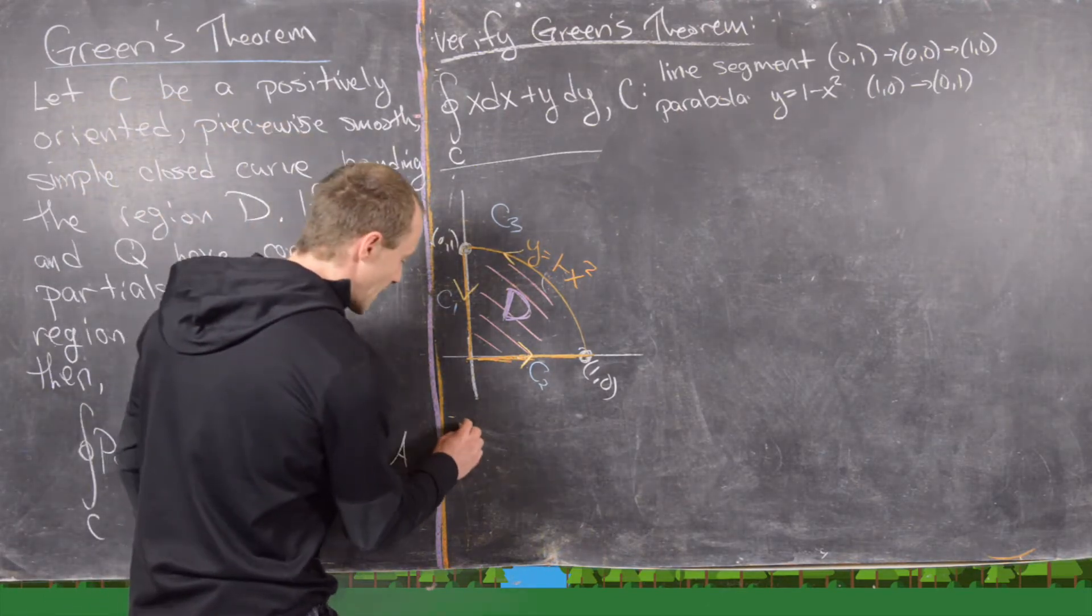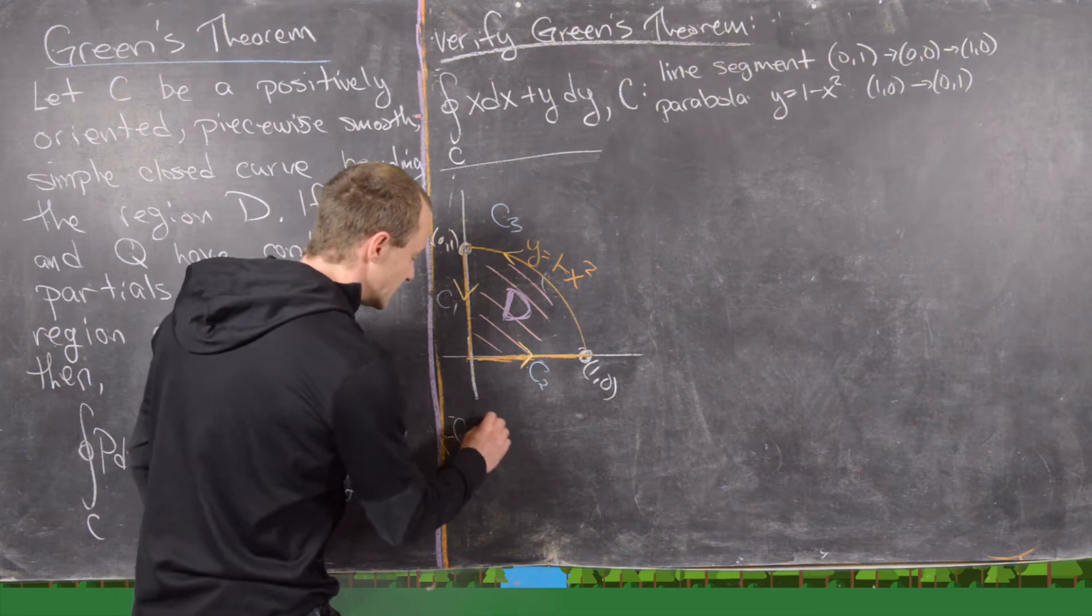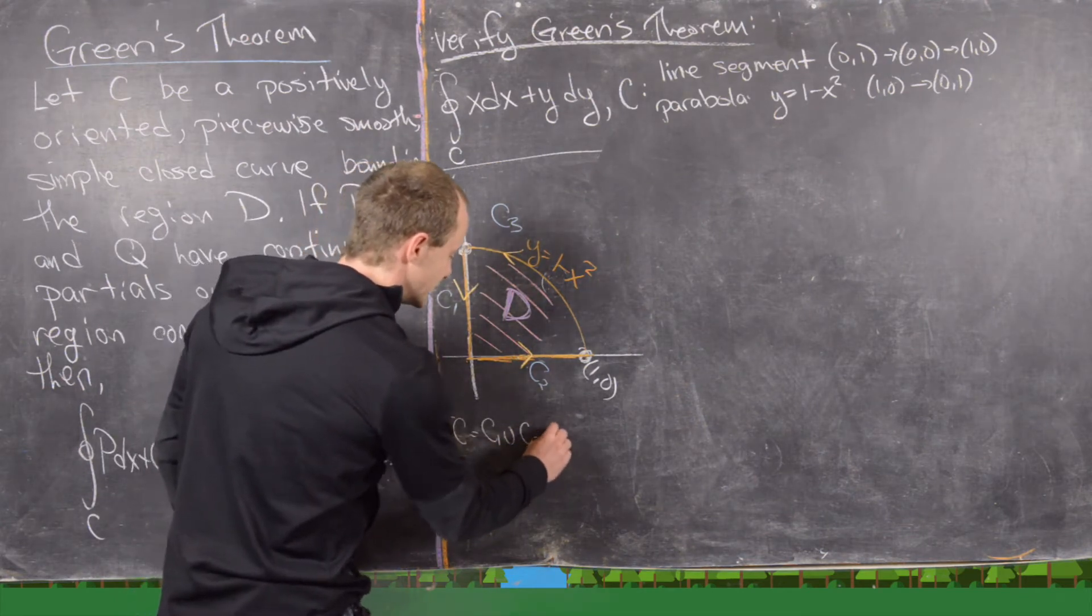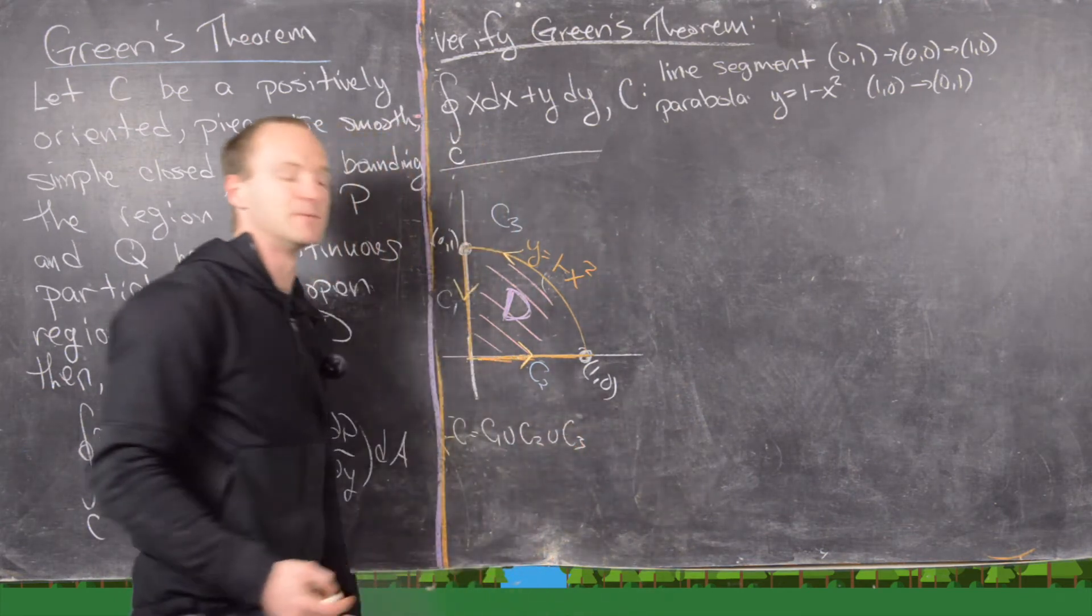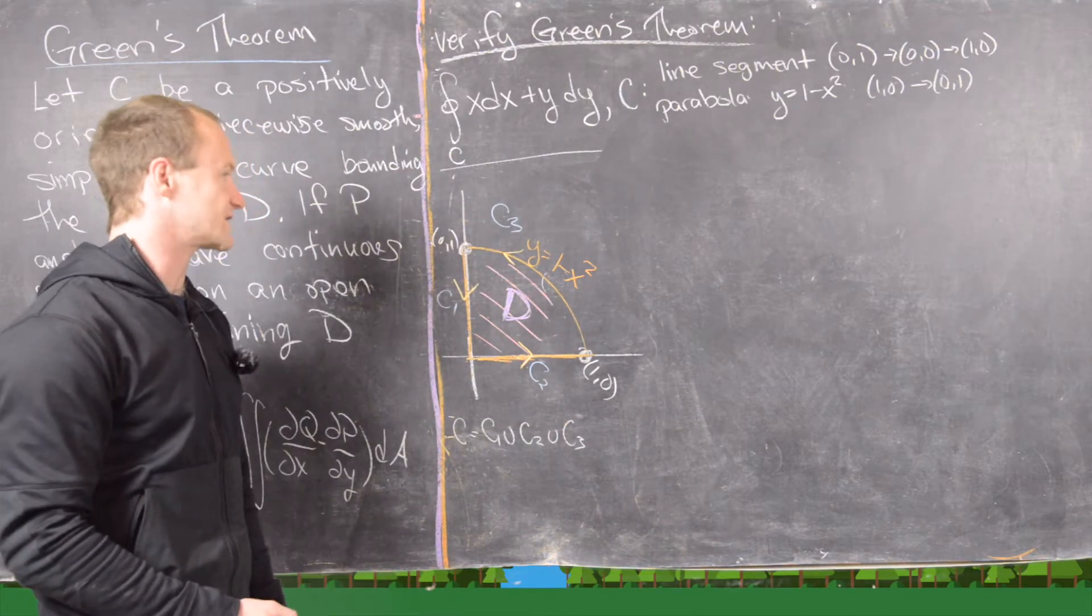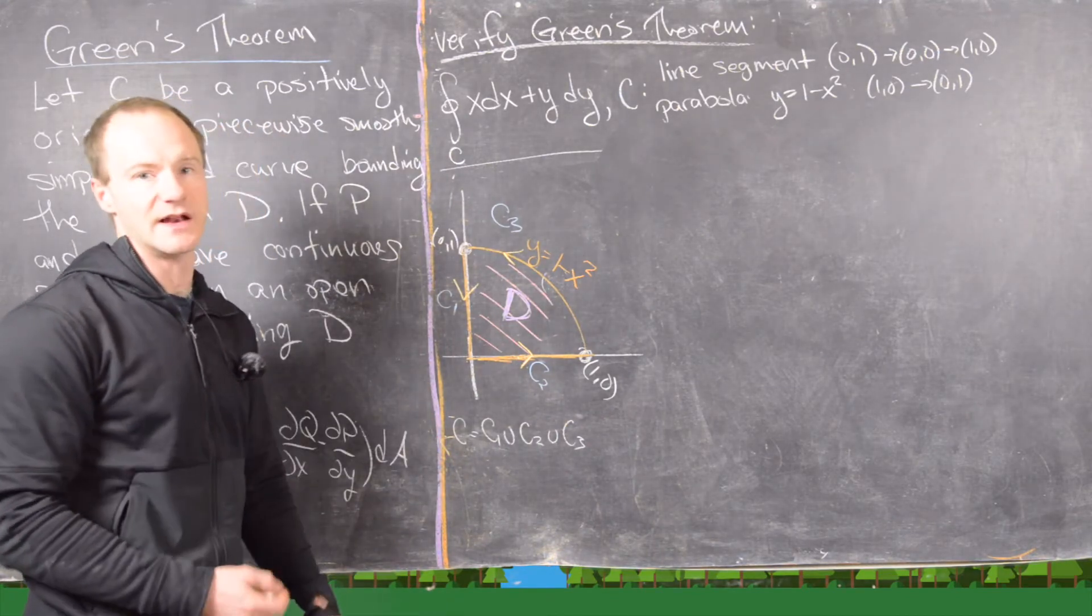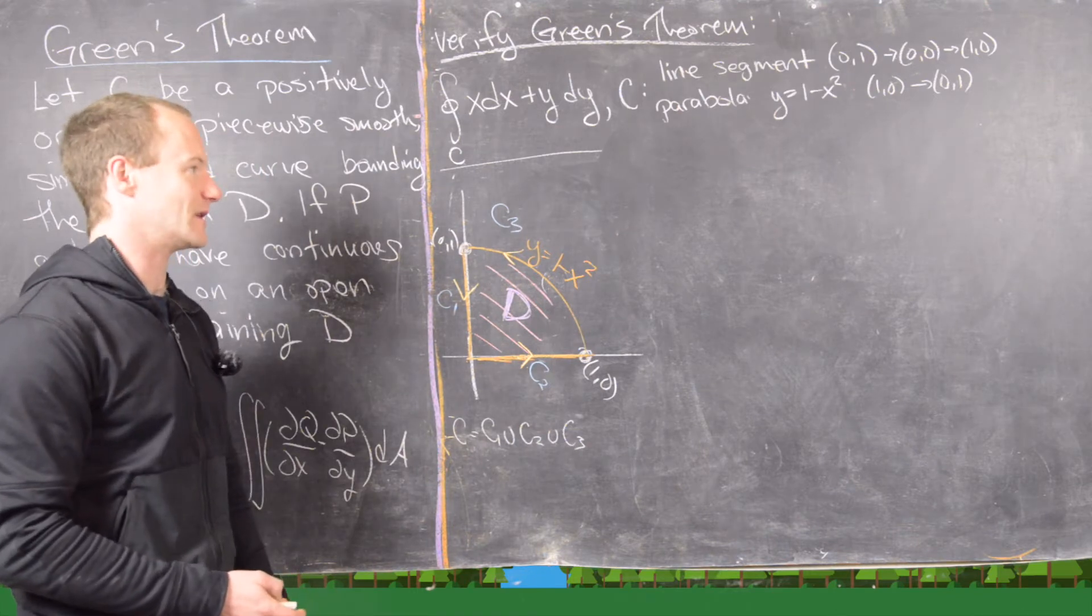and this pink region in the middle is the region bound by this curve, which is called D. And I just want to point out here that C is equal to C1 union C2 union C3 in this case. So in fact, in order to find the line integral over C, we're going to have to find the line integral on all of these parts and add them together.